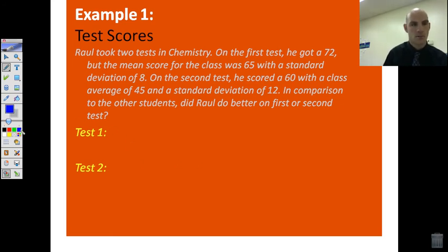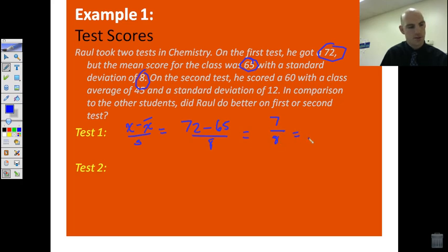Test number one. We are remembering that this is going to be x minus x bar over standard deviation. So, we are going to take his score, 72 minus the class average of 65, and we're going to put that over the standard deviation. When we do this, we get 7 over 8, which is .875. That means it was .875 standard deviations above the mean.